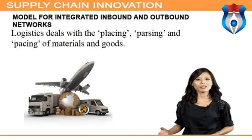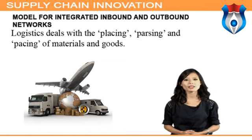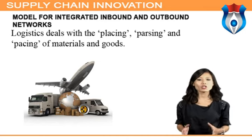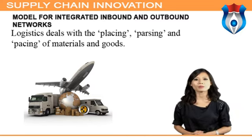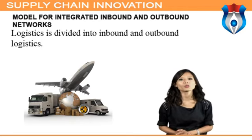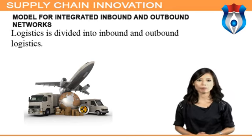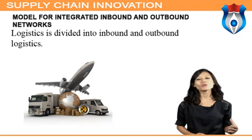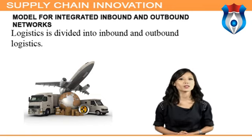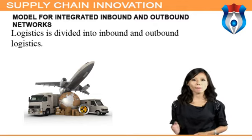Logistics deals with the placing, parsing, and pacing of materials and goods. The common objective of any logistics network model is to minimize transportation cost or maximize profit with focus on the end customer. Collaboration and virtual integration are trends that will revolutionize supply chain logistics. Logistics is divided into inbound and outbound: inbound logistics deals with ordering, procurement, and transport of materials from suppliers to the manufacturing facility, while outbound logistics moves, stores, and adds value to goods on the way to their final destination.